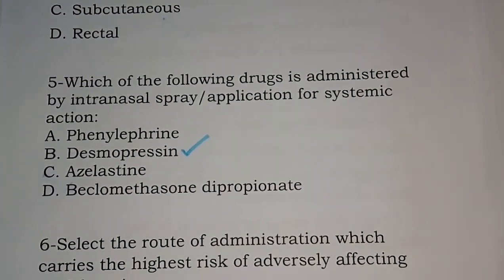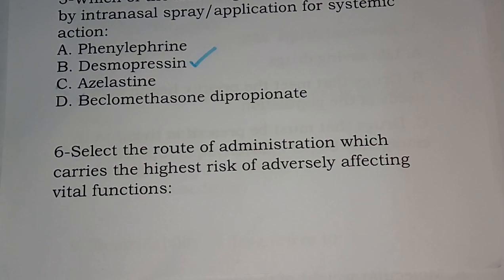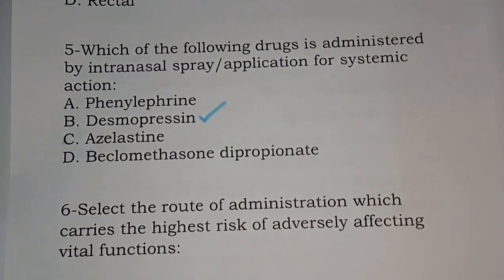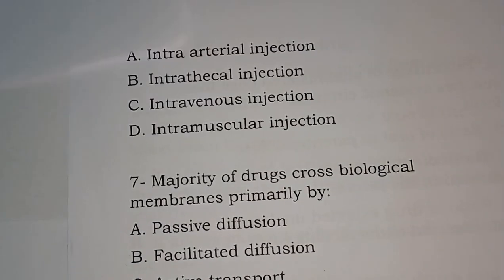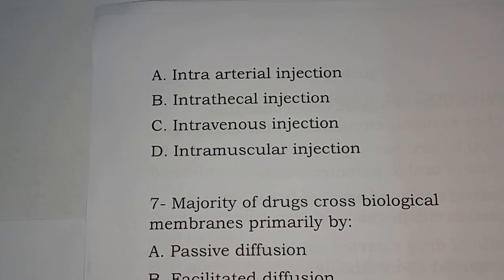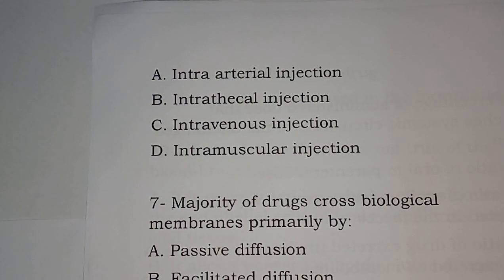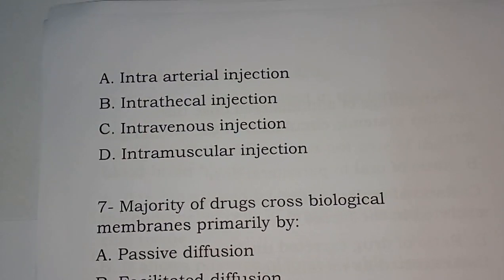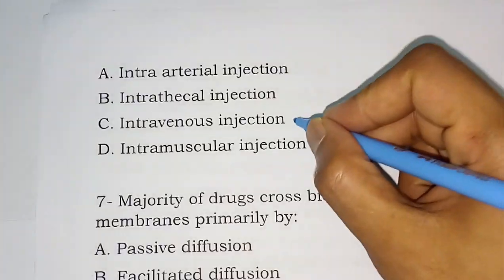Question number six: select the route of administration which carries the highest risk of adversely affecting vital function. Options are: intra-articular, intra-arterial injection, intrathecal injection, intravenous injection, intramuscular injection. The correct answer is option C — intravenous injection.